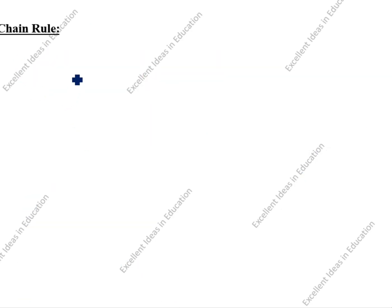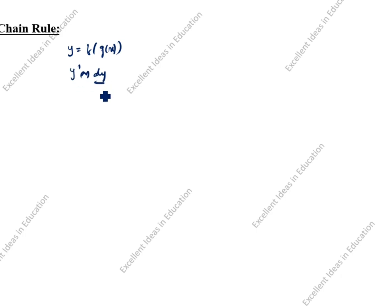Next: chain rule. What is the chain rule formula? y = f(g(x)). So dy/dx = f'(g(x)) · g'(x). This is the formula.